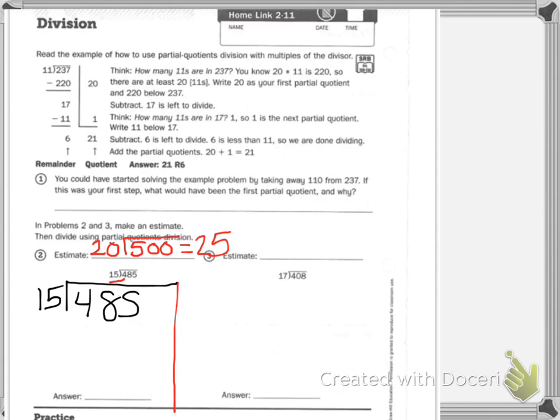So, how many times would 15 go into 450? 30. So, I'm going to write 450 and 30. Remember, that 30 means there are 15, there are 30 15s in our problem. Now, I need to subtract 5 minus 0 is 5. 8 minus 5 is 3.